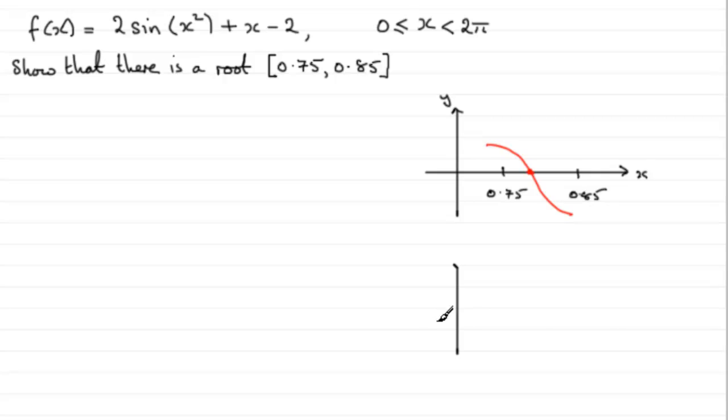Or, it could be a graph that looks something like this, where again, you've got your interval 0.75 and 0.85, and your graph is going from negative at 0.75 through to positive at 0.85, and here would be your root. So we're looking to see if there's a change in sign.